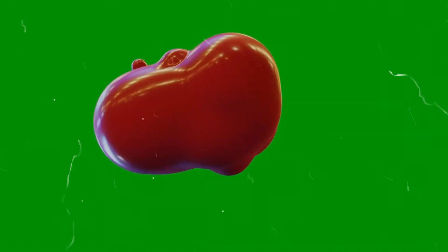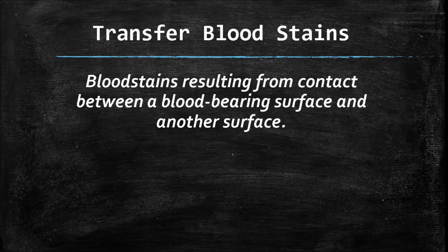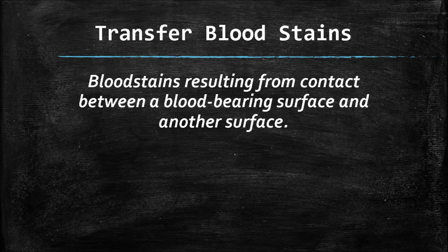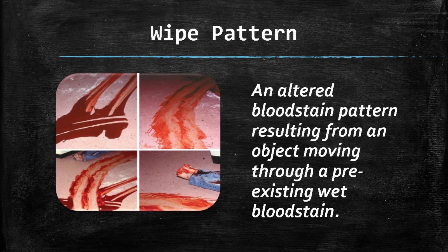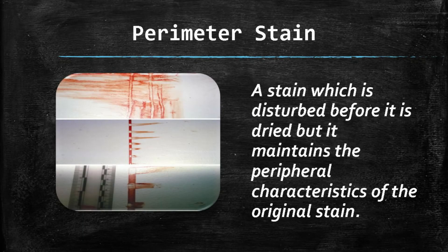Transfer bloodstains are bloodstains resulting from contact between a blood-bearing surface and another surface. For example, a swipe pattern is formed by the transfer of blood with characteristics that indicate relative motion between the two surfaces. A wipe pattern is an altered bloodstain pattern resulting from an object moving through a pre-existing wet bloodstain. A perimeter stain is a stain which is disturbed before it is dried but maintains the peripheral characteristics of the original stain.